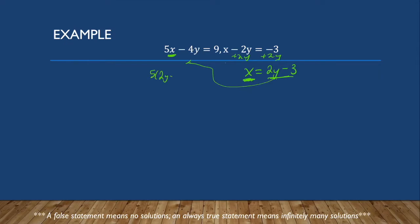I'm going to have 5 times (2y minus 3) minus 4y equals 9. These are equivalent, we've maintained our balance. I distribute that 5: 10y minus 15 minus 4y equals 9. If I combine like terms and add 15 to both sides, I get 6y equals 24. So y equals 4.